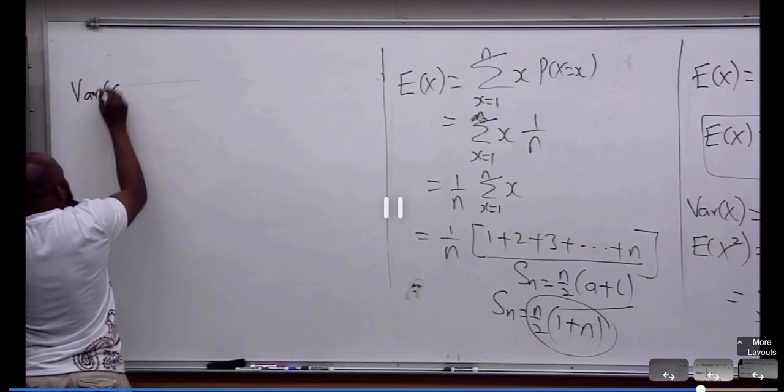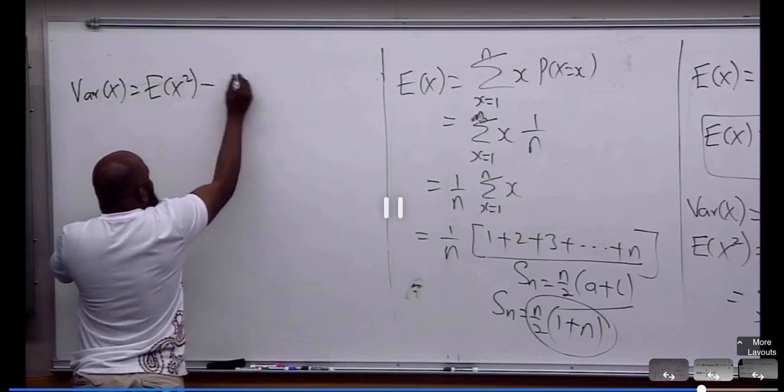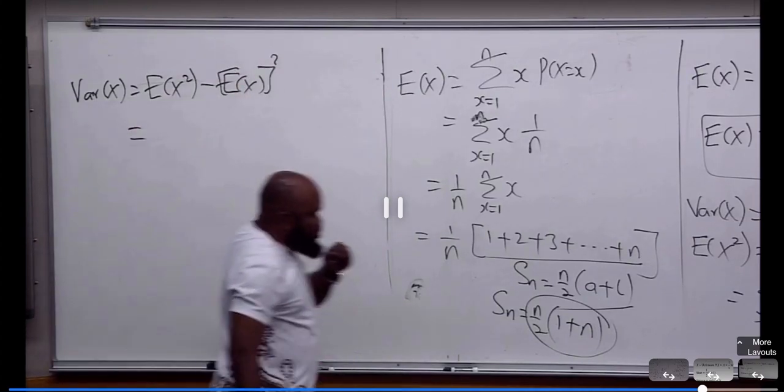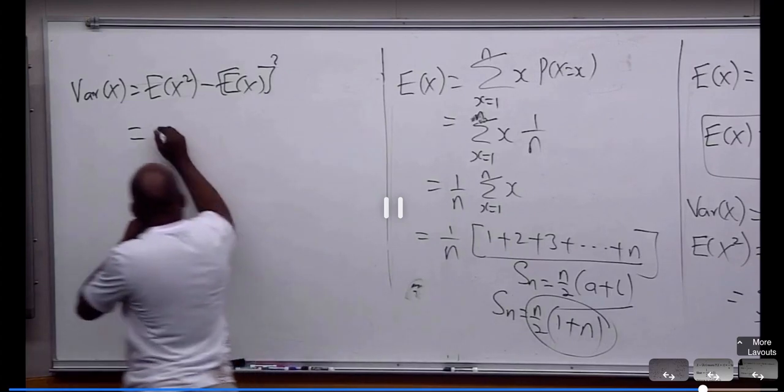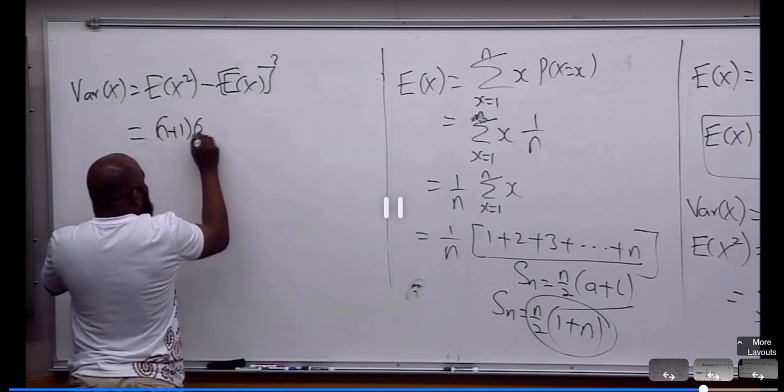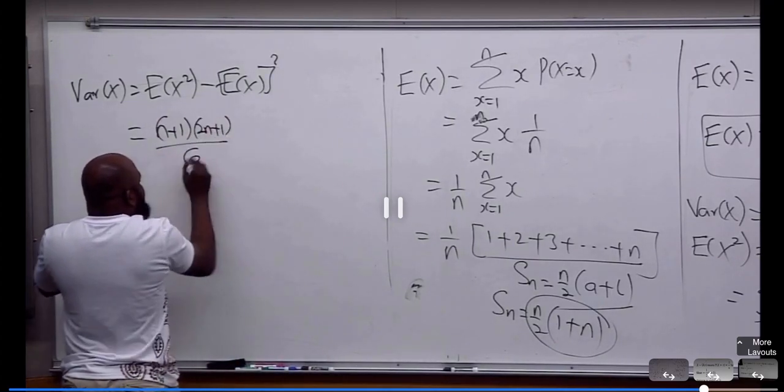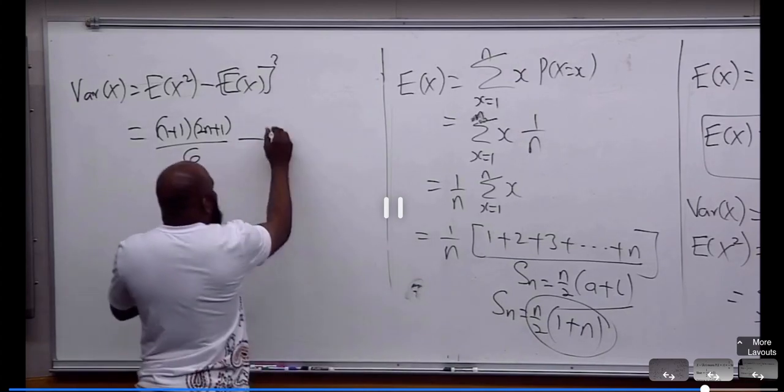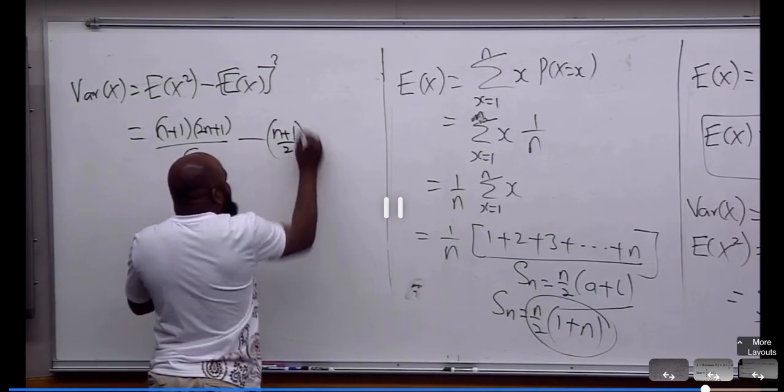Now, what would be the variance of S? The variance is E of S squared minus E of S all squared. What do I got here? (N+1)(2N+1) divided by 6 minus the square of what we got before.